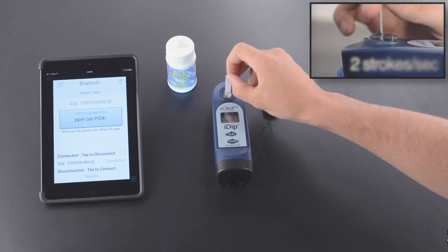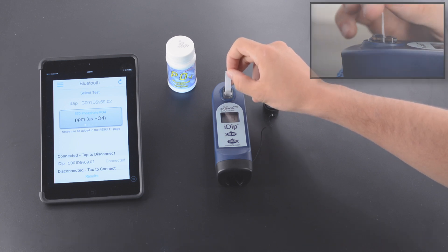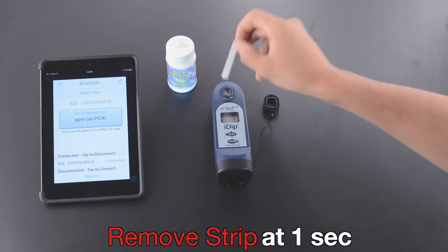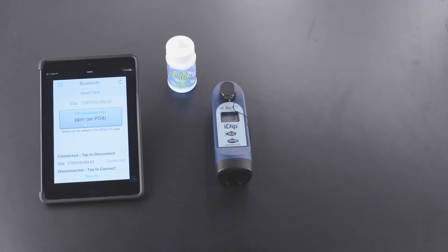Dip the strip for 20 seconds at two strokes per second. Remove the strip at one second, replace the tap, and wait 120 seconds.